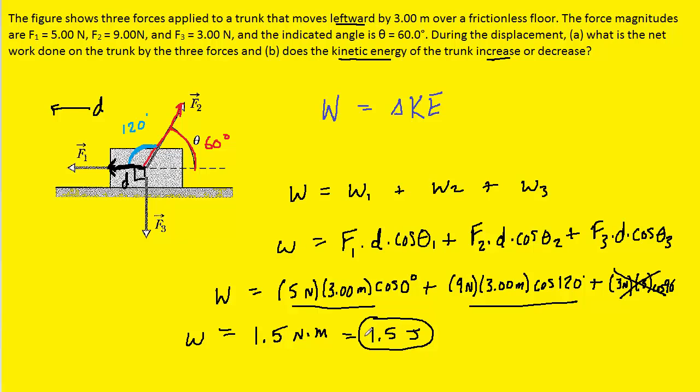Which tells us that the work done on an object is equal to the change in its kinetic energy. Well, we just determined the net work done on this object, and it turned out to be positive 1.5 joules. So we would fill that in for the net work on the object, and we would see from this work kinetic energy theorem,